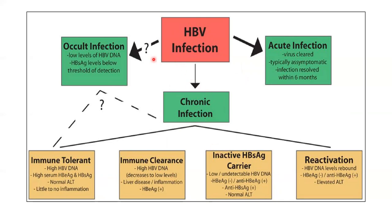In occult HBV infection, the DNA cutoff level is less than 200. HBsAg levels are very low and undetectable; the only way to detect it is by checking DNA levels. Hence, before transplant, we always look at HBV DNA levels.